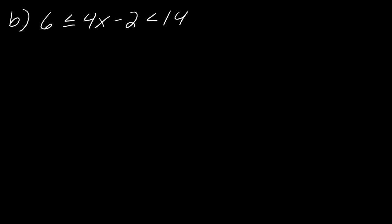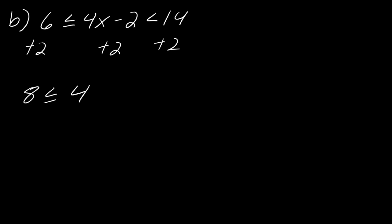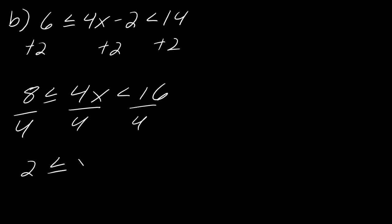Same principle with 6 ≤ 4x - 2 < 14. First add 2 to all sides: 8 ≤ 4x < 16. Then divide all sides by 4 to get 2 ≤ x < 4.